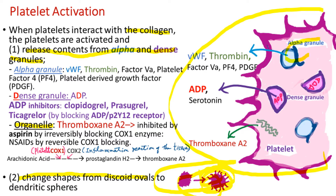From the alpha granules are released: von Willebrand factor, thrombin, clotting factor V, platelet factor IV, and platelet-derived growth factors. From the dense granules are released mainly ADP and some serotonin. Note that the D of dense granules matches the D of ADP — a helpful memory aid. From the platelet organelles is released thromboxane A2. ADP and thromboxane A2 are potent platelet aggregators.